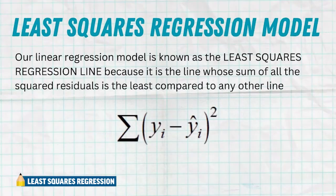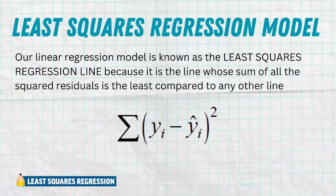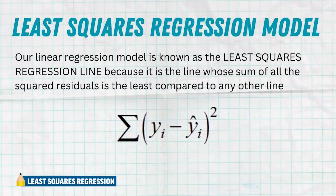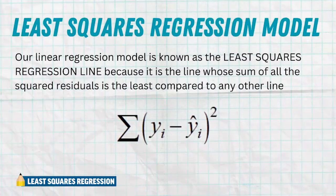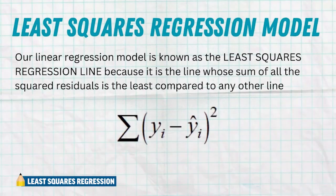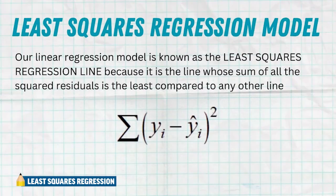That's going to produce the actual best line. Why does this make complete sense? To understand that, we can actually take a look at what's called a residual plot.